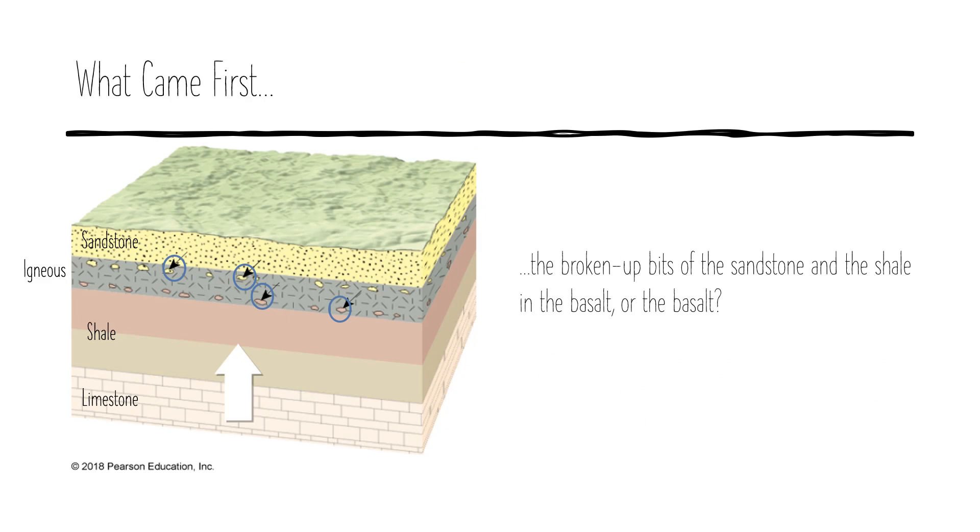Okay, now let's take a look at that igneous rock layer. It has chunks of the shale and the sandstone units that surround it broken up and included in that unit. So what do you think happened first? Did the sandstone and shale form then get broken up when the basalt erupted in between these layers as a sill and those little bits got stuck in the cooling igneous rock? Or do you think that the basalt formed and then the rock units around it broke up and got their pieces into that solid rock?